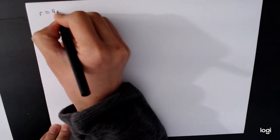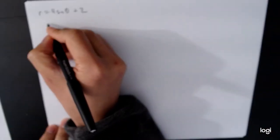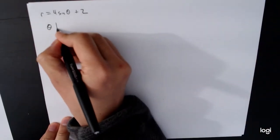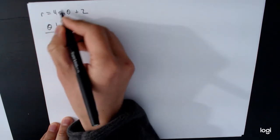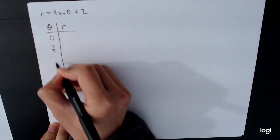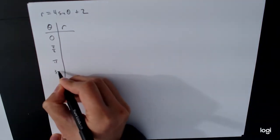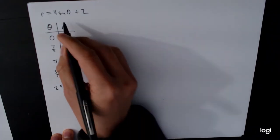So r equals 4 sine theta plus 2. First of all, we're going to look at our values. There's nothing in here changing the speed of the angle, so we can just use the same key values that we've been using. Now the value of r, we're going to have to actually do the calculation a little more carefully here.